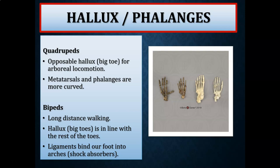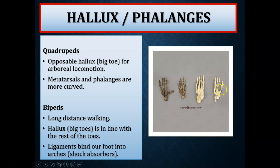The last anatomical features are the hallux — the big toe — and the phalanges — the finger and toe bones. Quadrupeds like chimpanzees have an opposable hallux for gripping branches, with longer and slightly curved metatarsals and phalanges. Ardipithecus ramidus shows an opposable hallux, indicating it was a habitual rather than obligate biped — bipedal in some circumstances but retaining the ability to brachiate and move in trees.